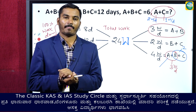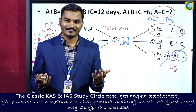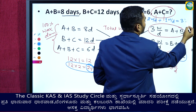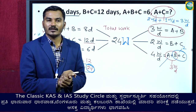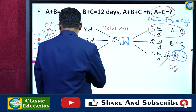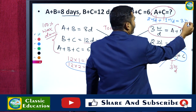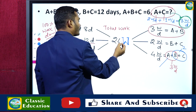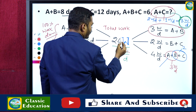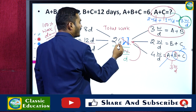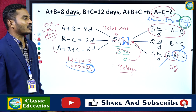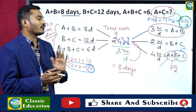Efficiency of B is not required here, so we skip it. Now A + C together = 2 + 1 = 3 units of work per day. Total work is 24 units. So number of days = 24 ÷ 3 = 8 days. A and C together will complete the work in 8 days.